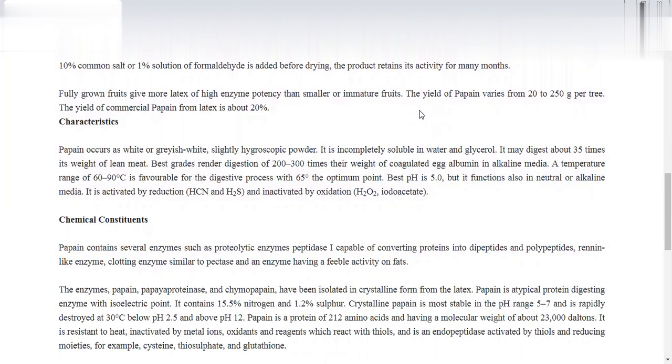Characteristics: Papain is incompletely soluble in water and glycerol. Better grades render digestion of 200 to 300 times their weight of coagulated egg albumin in alkaline media. Temperature of 60 to 90 degrees is favorable for the digestion process.